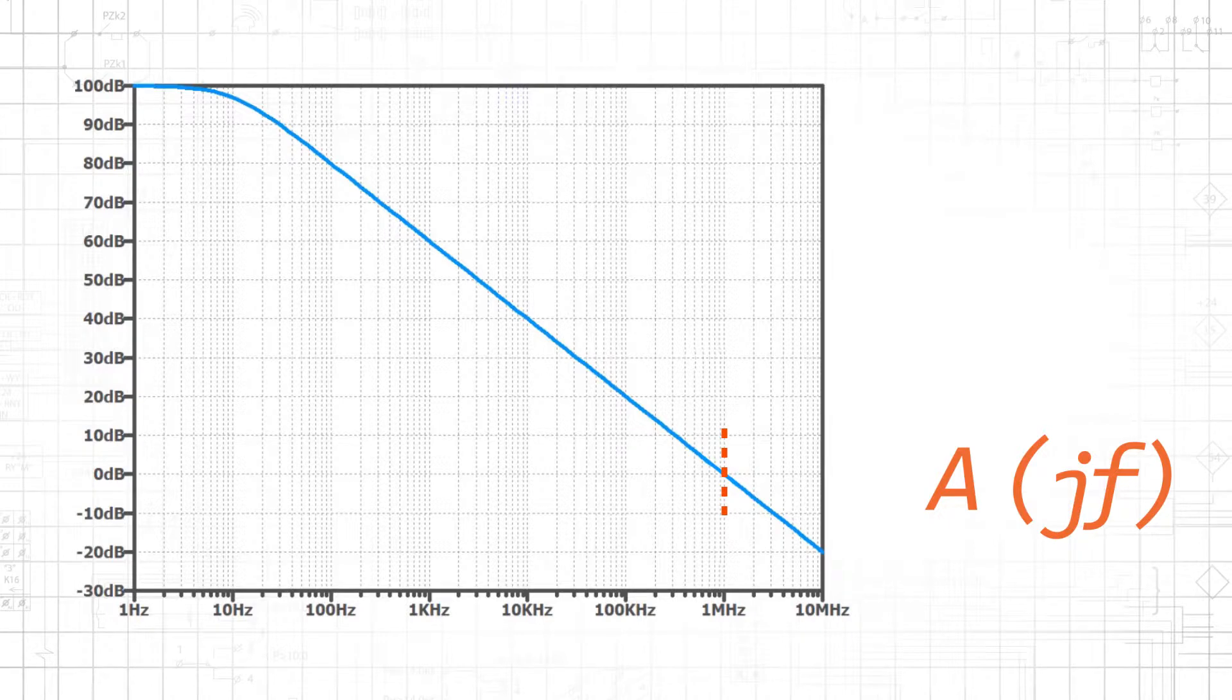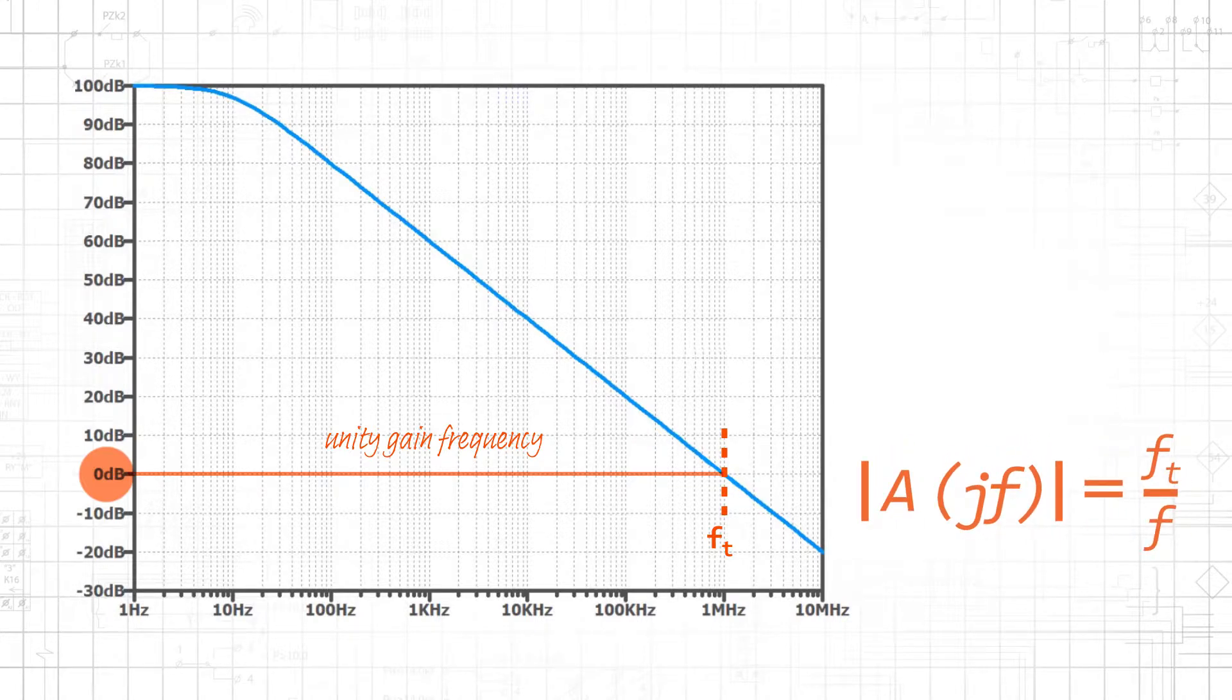The frequency at which the op-amp's gain reaches 0 dB is called the unity gain frequency. This is where the op-amp stops functioning as an amplifier, and it also gives us a convenient way to calculate the op-amp's open-loop gain at a given frequency. For frequencies significantly higher than the corner frequency, the gain is approximately equal to the unity gain frequency divided by the frequency of interest.